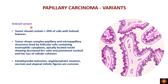The hobnail variant is defined when more than 30 percent of cells show hobnail features — apical cytoplasmic snouting with nuclei present at the apical surface of the cell, prominent nucleoli, and decreased nuclear-to-cytoplasmic ratio. Nuclear grooving may also be present. Papillae or micropapillae within follicles can be seen. This variant has a bad prognosis with extrathyroidal extension, angiolymphatic invasion, necrosis, and atypical mitotic figures.